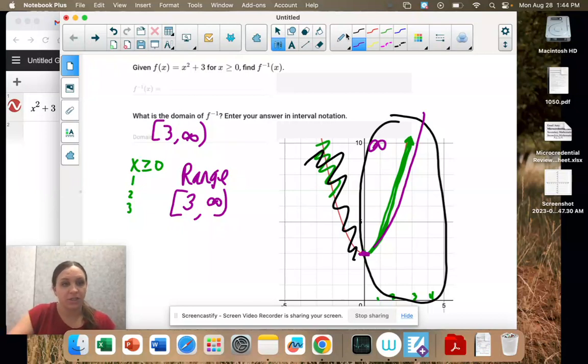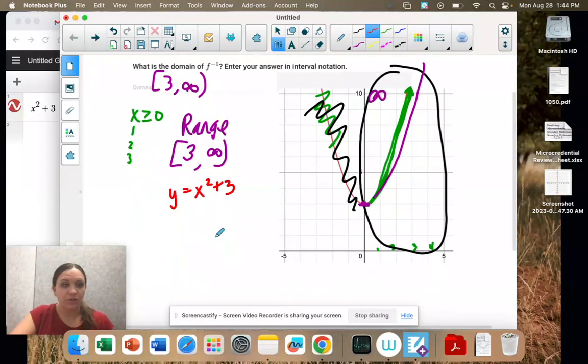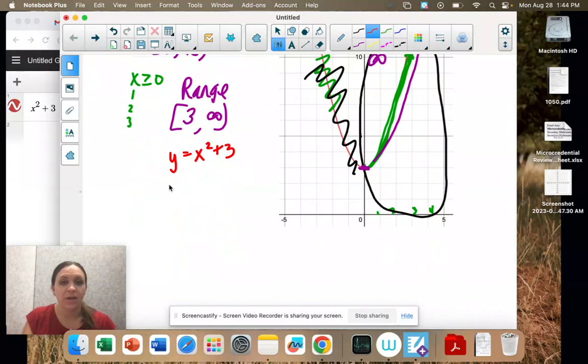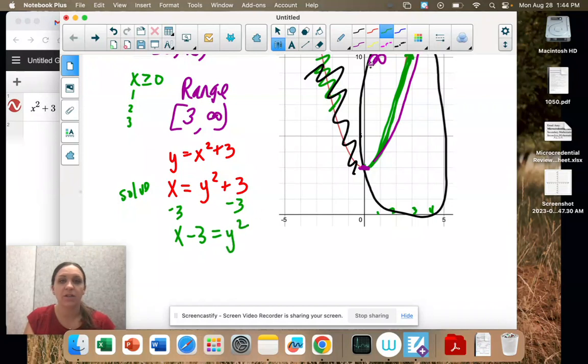To find the inverse, we're just going to find it algebraically. So remember, we switch the f of x with y. And then we switch x and y. So x equals y squared plus 3. And now we're going to solve for y. So I'm going to minus 3 on both sides. x minus 3 equals y squared. And then square root both sides. So y equals the square root of x minus 3.